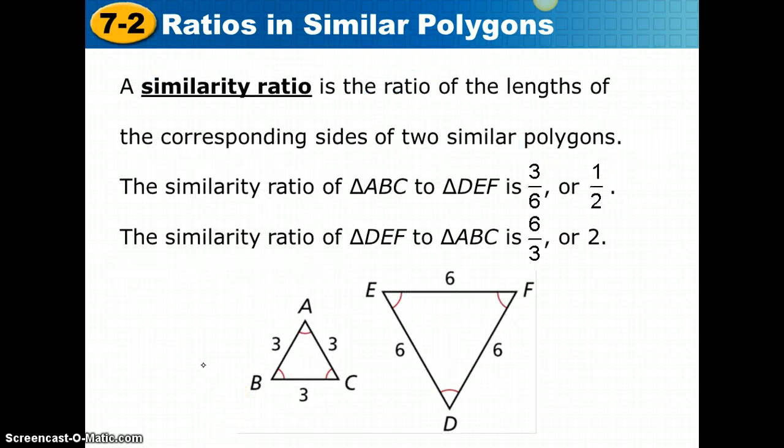A similarity ratio is the ratio of the lengths of the corresponding sides of two similar polygons. So if I said the similarity ratio of triangle ABC to triangle DEF, the order is important there. We're starting with triangle ABC then going to DEF. That would be 3 to 6, or 1.5.